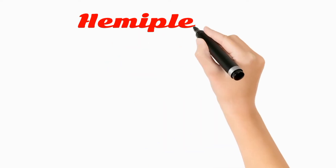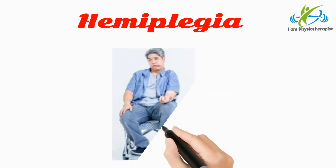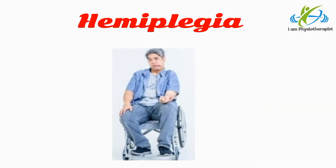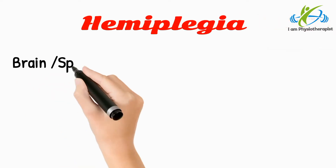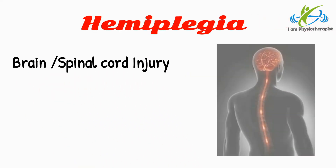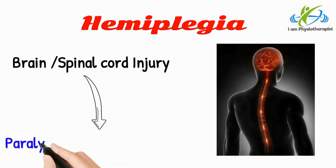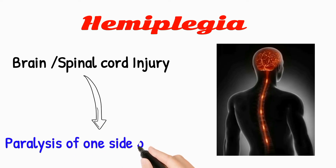Hemiplegia is a condition caused by brain damage or spinal cord injury that leads to paralysis on one side of the body.